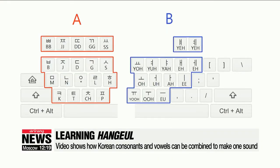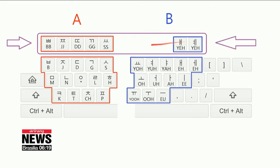Kim's video explains how the consonants of Hangeul on the A-side and the vowels of Hangeul on the B-side can be combined to make one sound. It shows different ways of combining A and B, with the possible combinations being A plus B, A plus B plus A, and A-B-A-A.